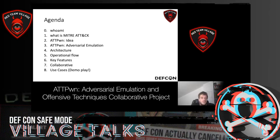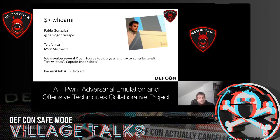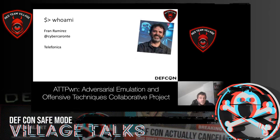Let's introduce ourselves. I am Pablo González. I work at Telefonica in Spain in the pre-innovation department where we play with cybersecurity and artificial intelligence. We develop several open source tools and try to contribute with crazy ideas. I am MVP of Microsoft since 2017, have written some books in Spanish about cybersecurity, and am a teacher at several universities in Spain. My partner Fran Ramírez works with me at Telefonica in the same pre-innovation department, focusing on cybersecurity and machine learning. He has worked several years in the USA as a system administrator and has written some books about Docker and machine learning.